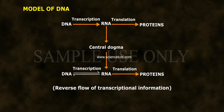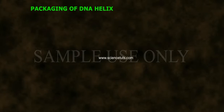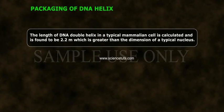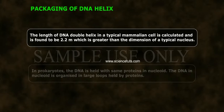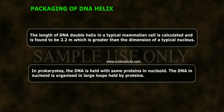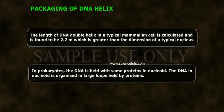Regarding the packaging of the DNA helix: the length of the DNA double helix in a typical mammalian cell is calculated to be 2.2 meters, which is greater than the dimension of a typical nucleus. In prokaryotes, the DNA is held with some proteins in the nucleoid, where it is organized in large loops held by proteins.